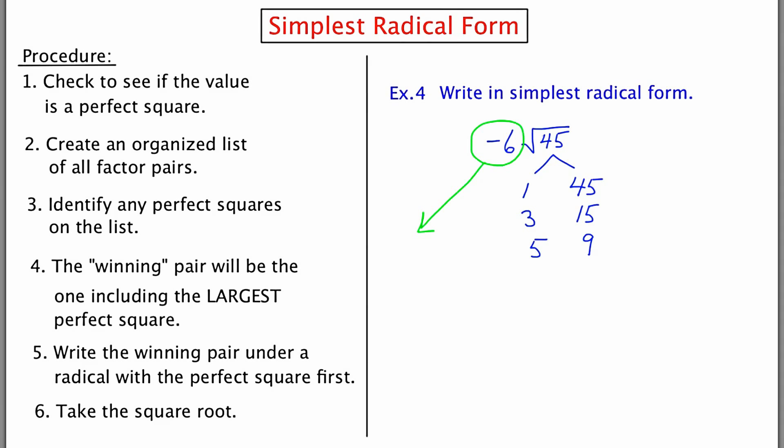Sometimes the list is short, other times there can be many possibilities. This one only has 3 pairs, so it's not that bad. The next part of the process is to identify perfect squares. They are 1 and 9. The largest perfect square is 9, so this is going to be our winner, 5 times 9. When I write these winners underneath the radical, I like to put the perfect square first. So instead of 5 times 9, I'm going to put 9 times 5.